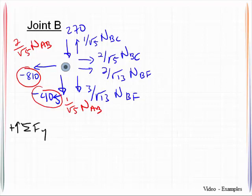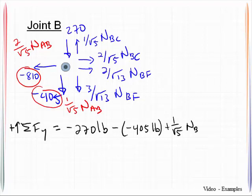I'm going to sum forces in the y direction. This will give me negative 270 pounds minus a negative 405 pounds plus 1 over square root of 5 NBC minus 3 over square root of 13 NBF, and all that is equal to 0. You're going to notice there's two unknowns in that. In this particular case, there was not a possibility to choose an equilibrium equation that had only one unknown.